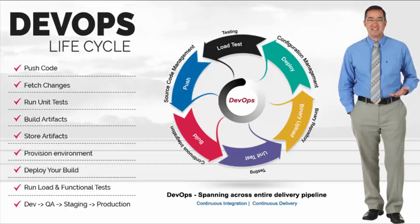The DevOps lifecycle — which I've covered in previous lectures — encompasses source code management, testing, continuous integration, unit testing, binary uploads, deployment, and so on. You push code, fetch changes, run tests, build artifacts, store those artifacts, provision the environment, deploy your build, run more tests, and then move into production. DevOps spans across the entire delivery pipeline, and of course we need tools to go through this process.